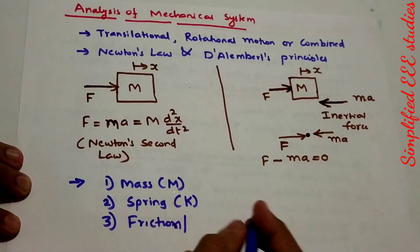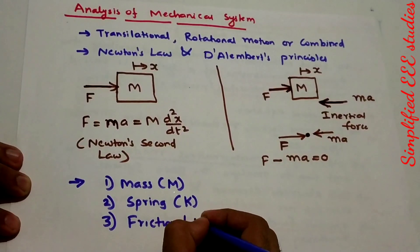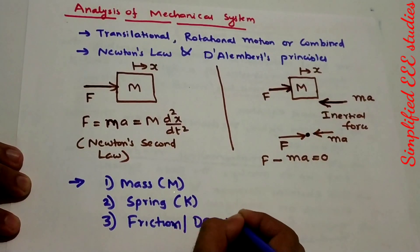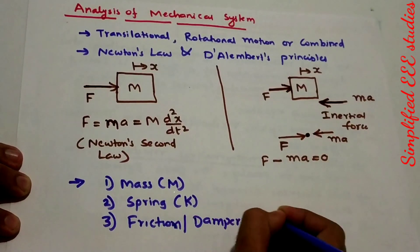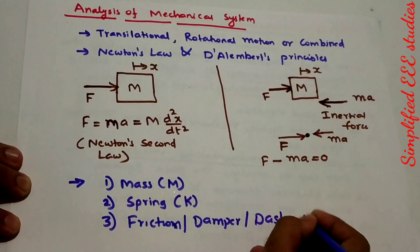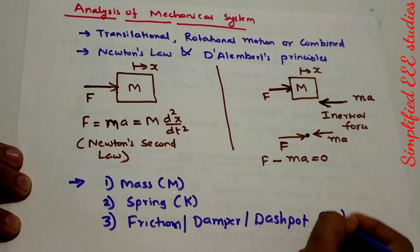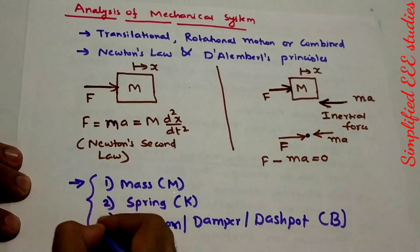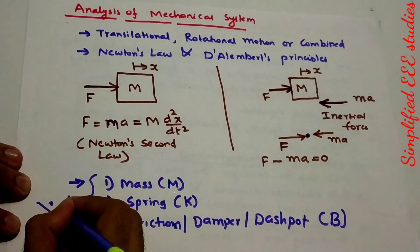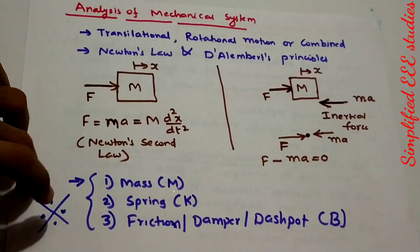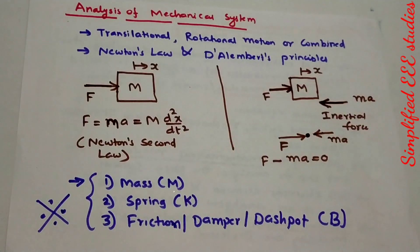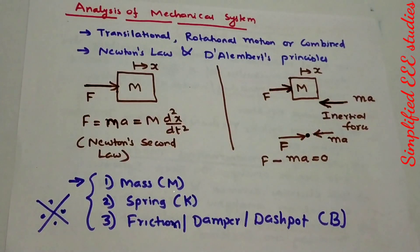Friction, also called Damper or Dashpot, is denoted by the letter B. These are the most important elements used in mathematical modeling in mechanical systems: Mass, Spring, and Friction or Damper or Dashpot. These three elements should be familiar to you.